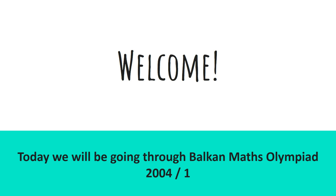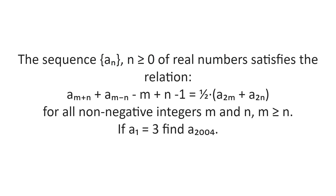Today we'll be going through problem 1 from the Balkan Maths Olympiad 2004. The sequence a(n), where n is greater or equal to 0, of real numbers satisfies the relation: a(m+n) + a(m-n) - n+n-1 is equal to one half multiplied by a(2m) + a(2n), for all non-negative integers m and n where m is greater or equal to n. If a(1) is equal to 3, find a(2004).